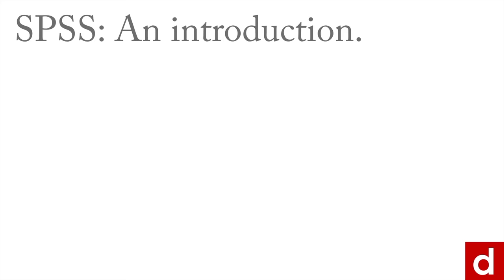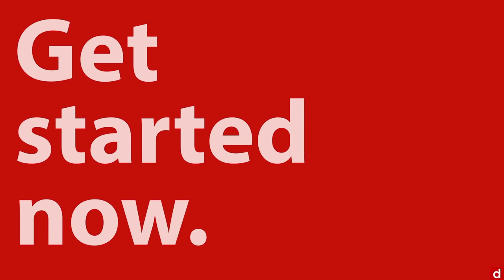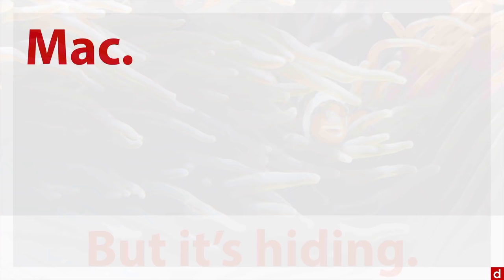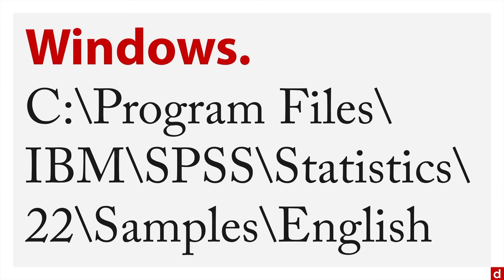We'll continue our introduction by taking a look at the sample data that comes as part of the SPSS application. This allows you to get started right away and see how SPSS works. The hard part is that it's totally hidden, so you need to know where to look. On a Macintosh, it's in your Applications folder under IBM SPSS Statistics 22 (or whatever version), then Samples, then English. On Windows, it's C:\Program Files\IBM\SPSS Statistics\22\Samples\English. You have to navigate there manually.